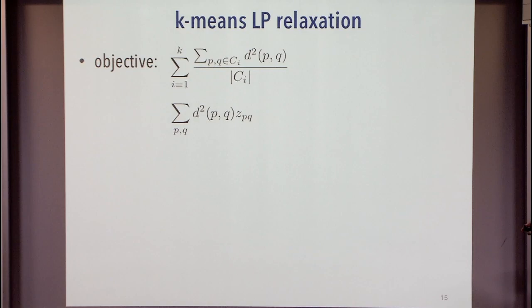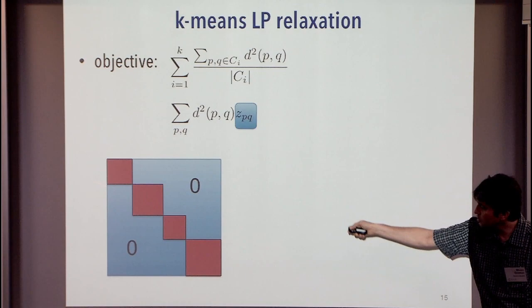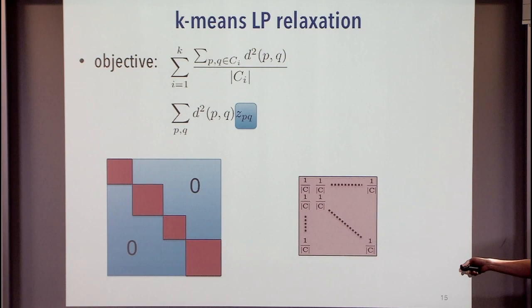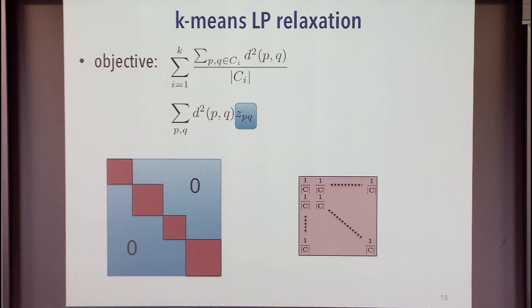To write down the k-means objective, think of it as sum of squared distances multiplied by variables z_{pq} as in the k-median case. In an integer solution, the z_{pq} values have a block diagonal structure — within a cluster, all these values are 1 over the cluster size, and zero outside the blocks. So we write down linear constraints on what these z_{pq} values should be. The relaxation is almost exactly the same as k-median, with one difference: I add a symmetric constraint z_{pq} ≤ y_q as well, so if z_{pq} is positive it means p and q are in the same cluster of size 1/z_{pq}.